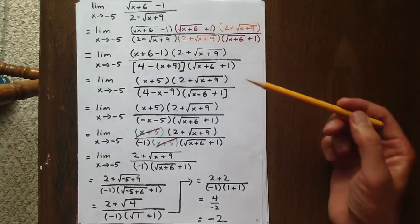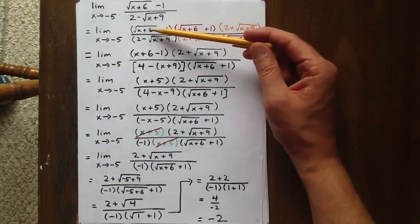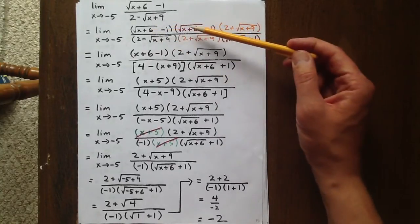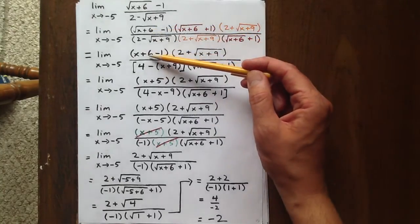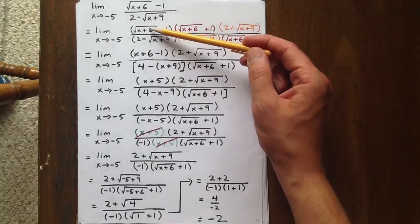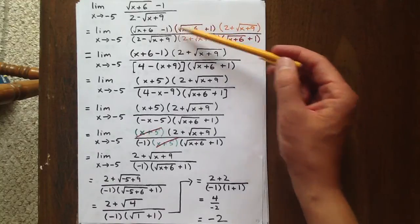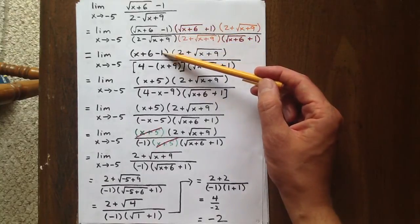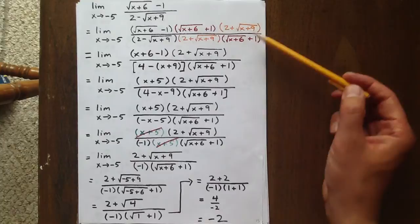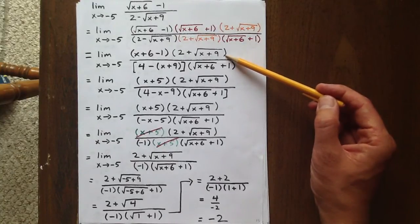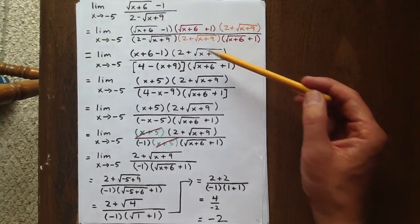Now I ordered them differently here because, as you may see, the square root of x plus 6 times the square root of x plus 6 is x plus 6. Distributing further will cancel out the middle terms, and we will have a minus 1, and we'll be left with this orange factor of 2 plus the square root of x plus 9.